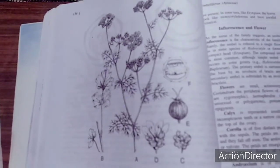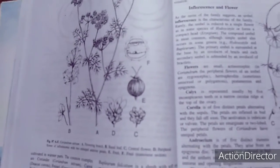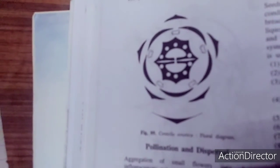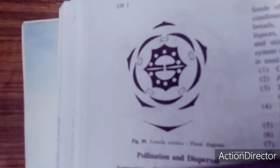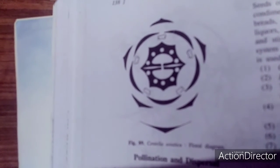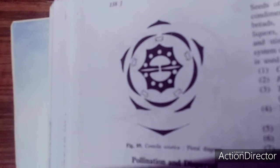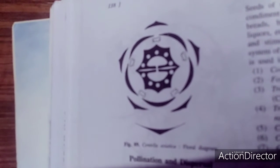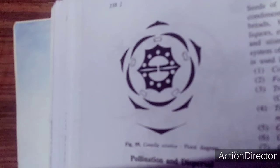This family can be recognized with the umbel inflorescence. The first interesting feature is the umbel inflorescence. Bisexual flowers are present, epigynous. The outer flowers are zygomorphic and inner ones are actinomorphic. Sepals are five, petals are five, these are inflexed.